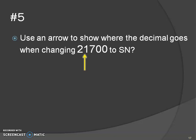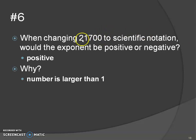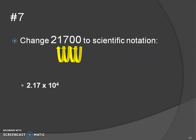2.1700 is going to be the number. Why does the decimal go there? Because the number before the decimal can only be the digits one through nine — there's only one digit before the decimal. When changing this number to scientific notation, is the exponent going to be positive or negative? Hopefully you know it's positive, because this number is rather large. Now change it to scientific notation: the decimal starts at the end and moves one, two, three, four times, so the number is 2.17 times 10 to the fourth power.